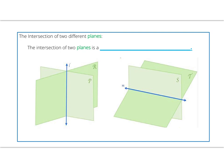Our next figures represent two planes intersecting. The intersection of two planes is a line. Note here plane P and plane R, naming two different planes.